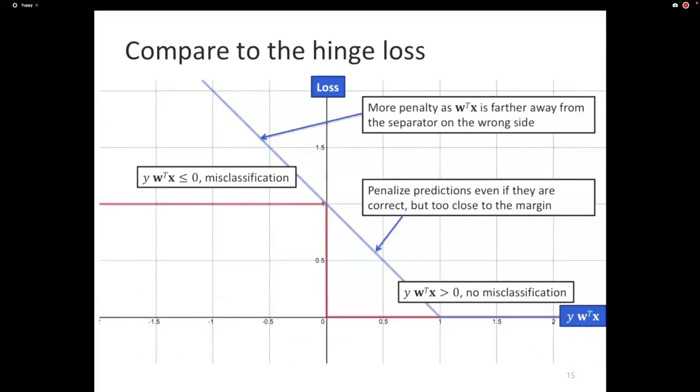We've already encountered the hinge loss. The hinge loss is one of the many surrogates of the 0-1 loss. It has these three regimes. If the example lies outside the margin, then there is no penalty. If the example lies on the wrong side of the margin, or if misclassified, the penalty grows linearly depending on how far the example is from the margin.